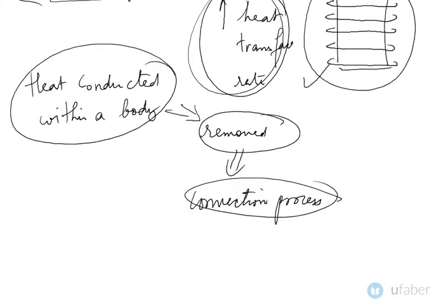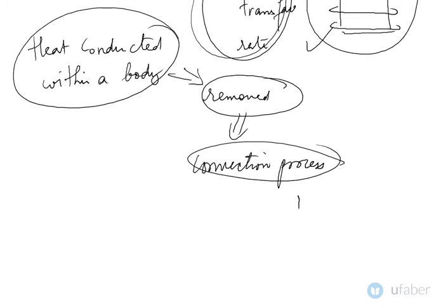Suppose this is the cylinder wall — this is the wall thickness, with combustion taking place inside the cylinder. Heat from this fluid goes into the wall via convection. This is your fin on the outside. The heat is conducted through the material and then again through the finned surface.